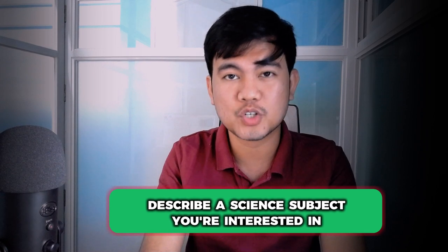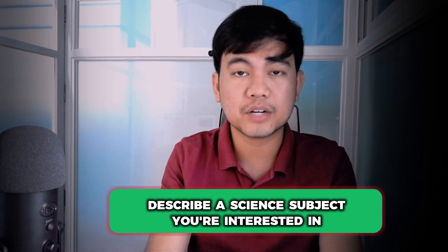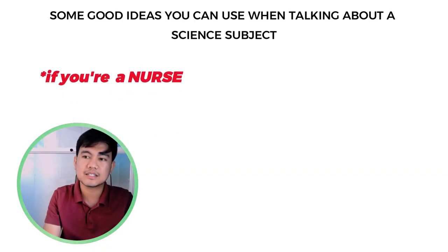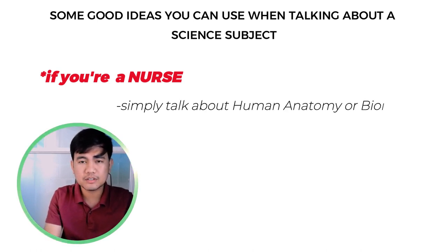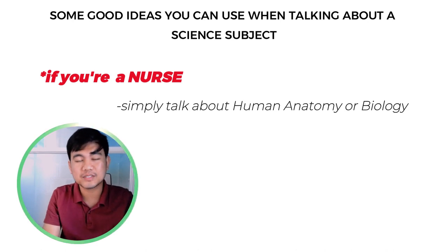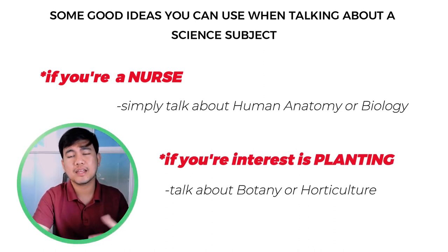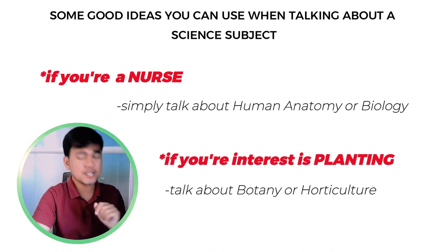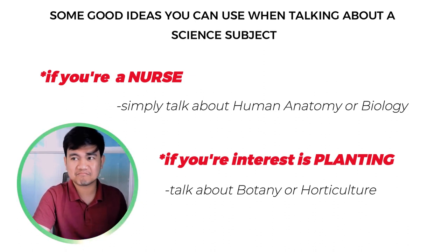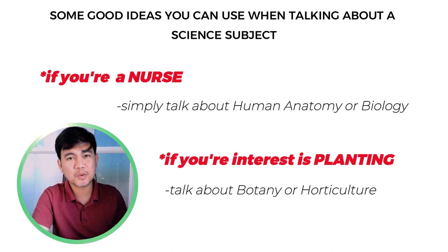Let us have a science subject you're interested in. Just like my earlier advice, relate the topic to your work or your interest because you will never run out of things to say. For example, if you're a nurse, talk about human anatomy or biology because you already know a lot about that subject from your university days and your work as a healthcare professional. Or if your interest is planting, talk about botany or horticulture, discuss the various plants you know and cultivate at home, and to make your story longer, be creative by talking about how planting saves you from depression or anything like that — developing a story that is not boring but inspiring.